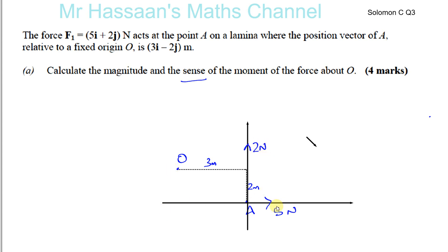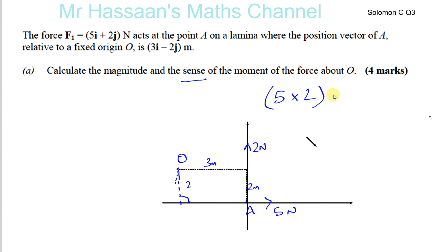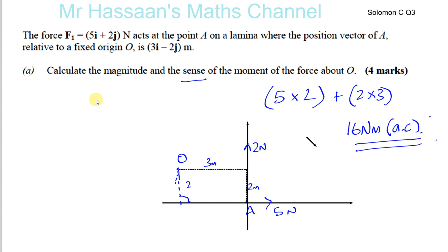Thinking about the five Newton component: the perpendicular distance between O and the line of that force is two meters. So the moment of the five Newtons about O is 5 × 2, and that's in the anticlockwise direction. The two Newton component acts upward; its perpendicular distance from O is three meters — also anticlockwise. So we have plus 2 × 3. That gives 10 + 6 = 16 Newton meters anticlockwise.